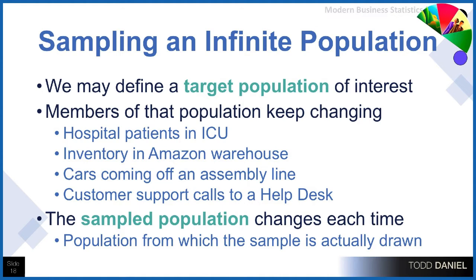There are constant changes. What we can do is sample the group that exists right now, and we will assume that what we learned from that sample will tell us not only about this population as it exists, but also future populations.